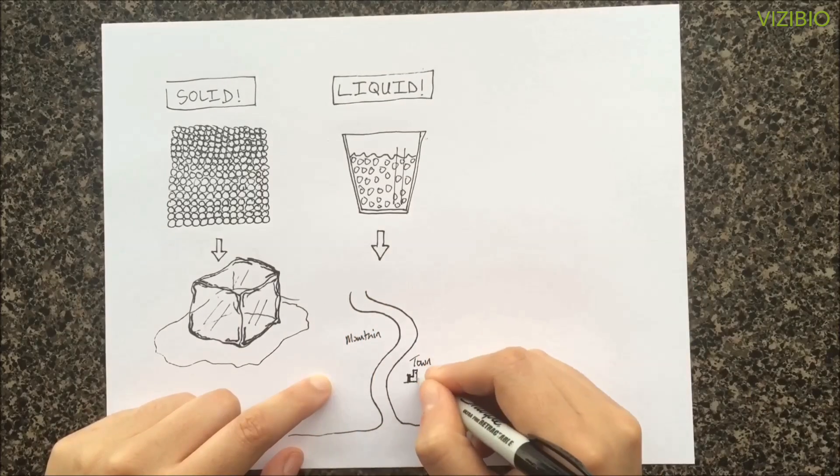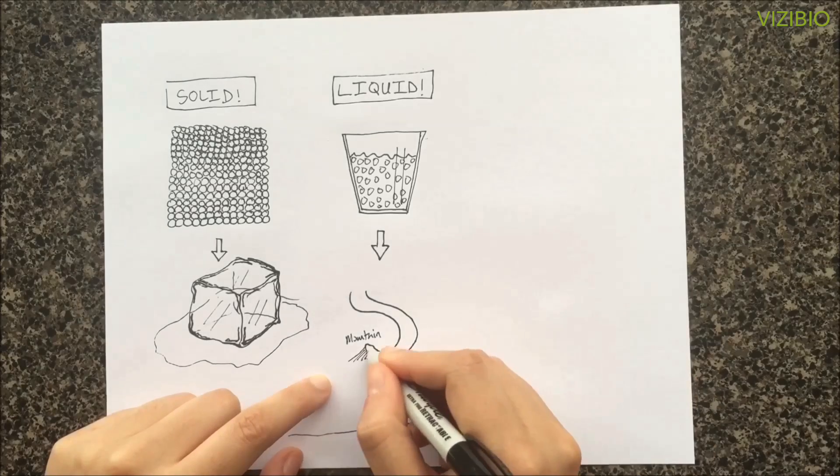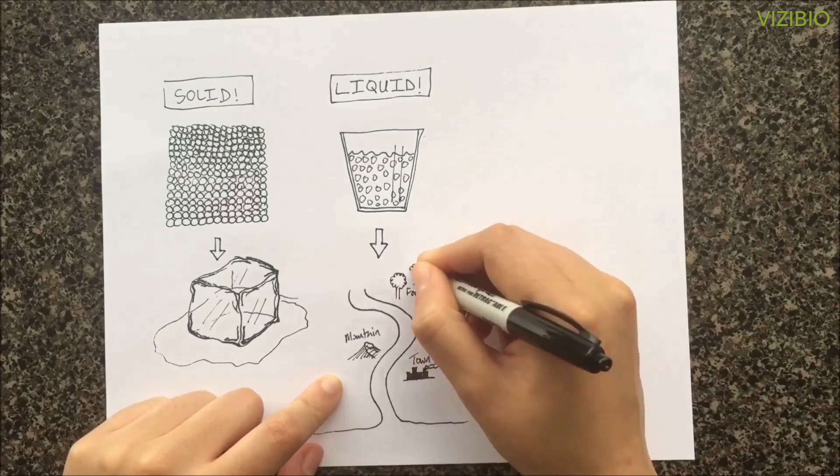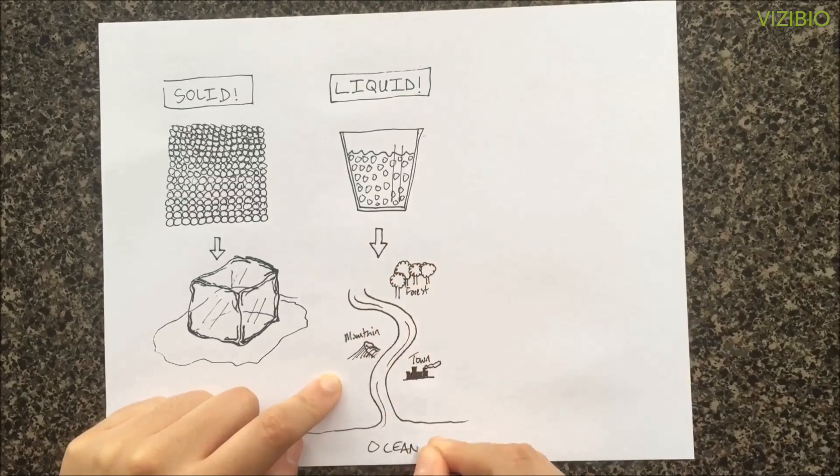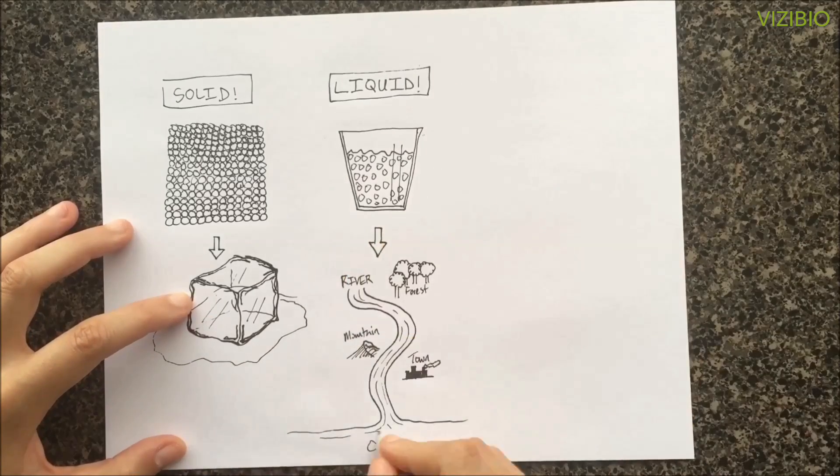Liquids will often change shape to fit their new environment. A river is a great example of water as a liquid because water has to flow around objects to reach its destination.